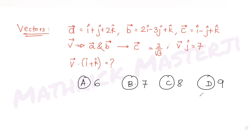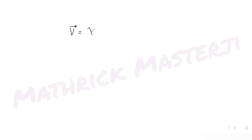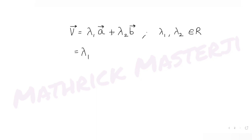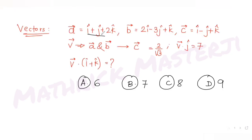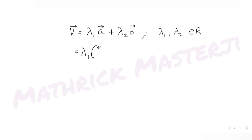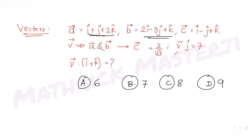Since vector v is in the plane of a and b, we can write v = λ₁·a + λ₂·b, where λ₁ and λ₂ are real constants. Substituting, we get λ₁(î + ĵ + 2k̂) + λ₂(2î - 3ĵ + k̂).